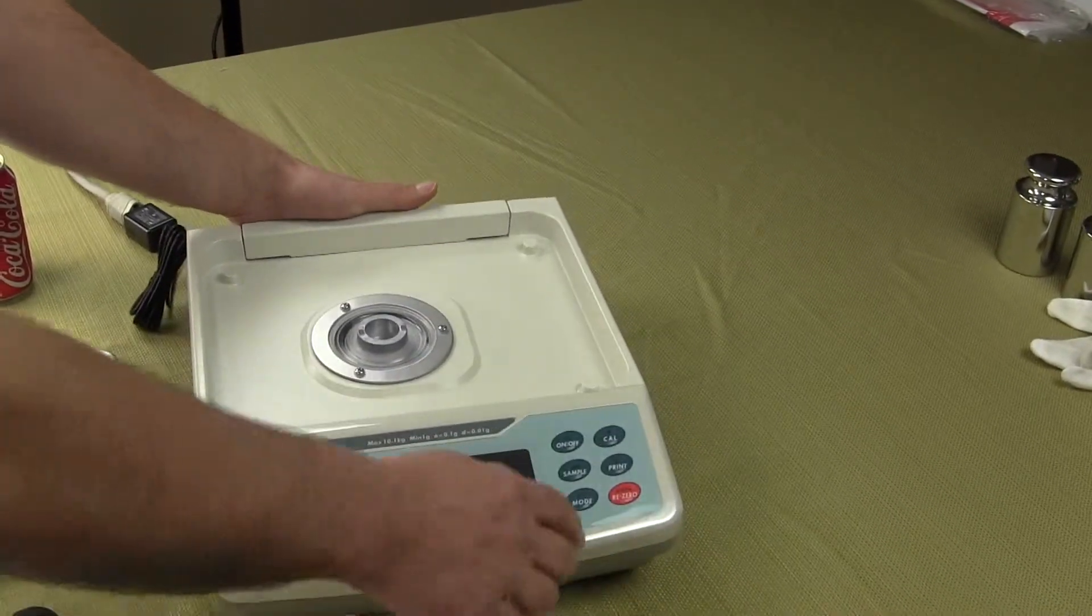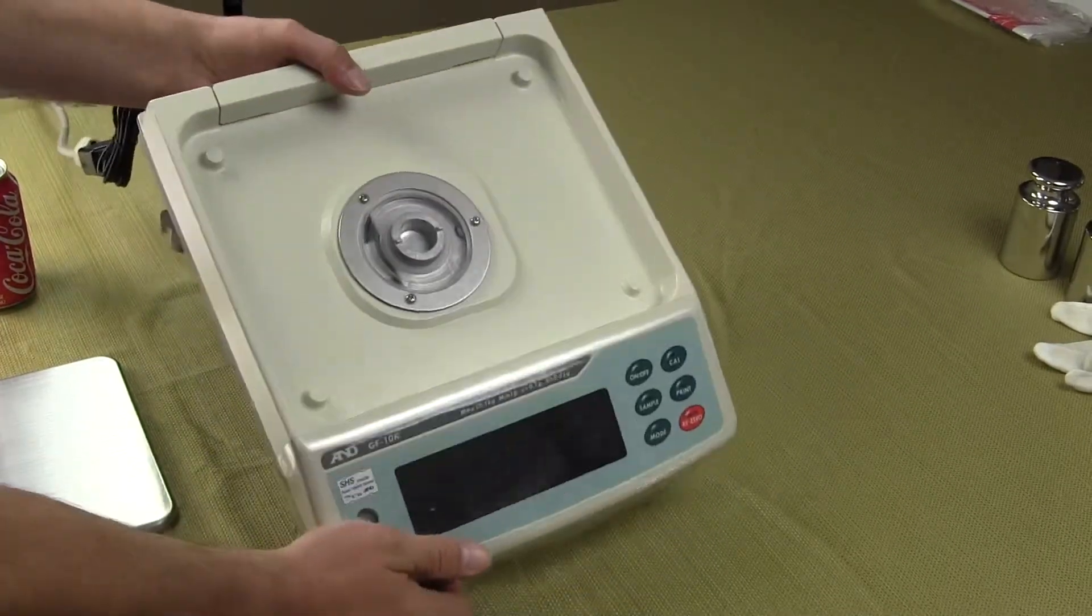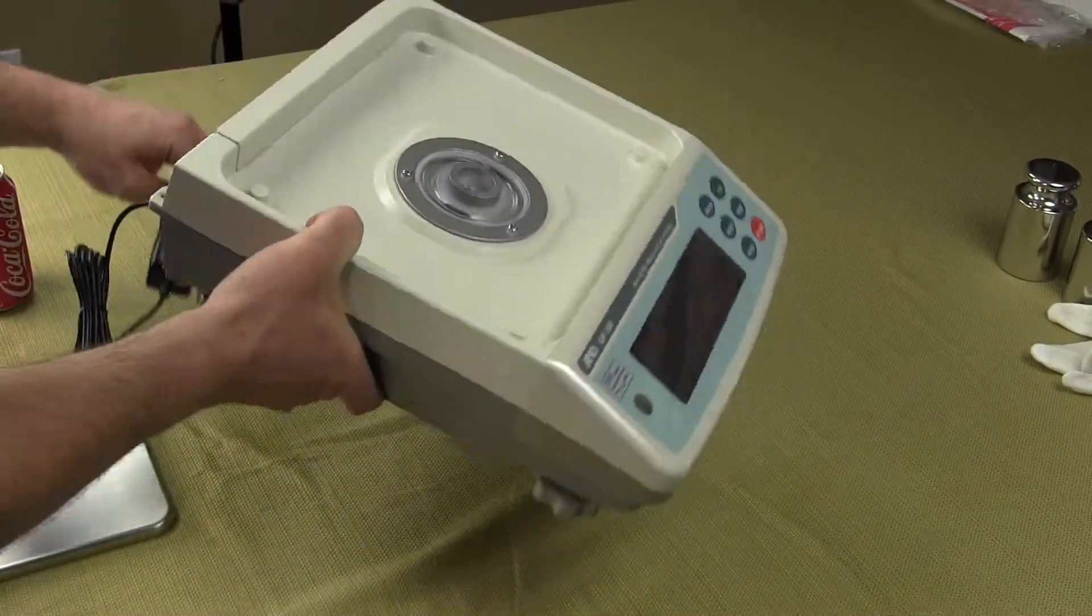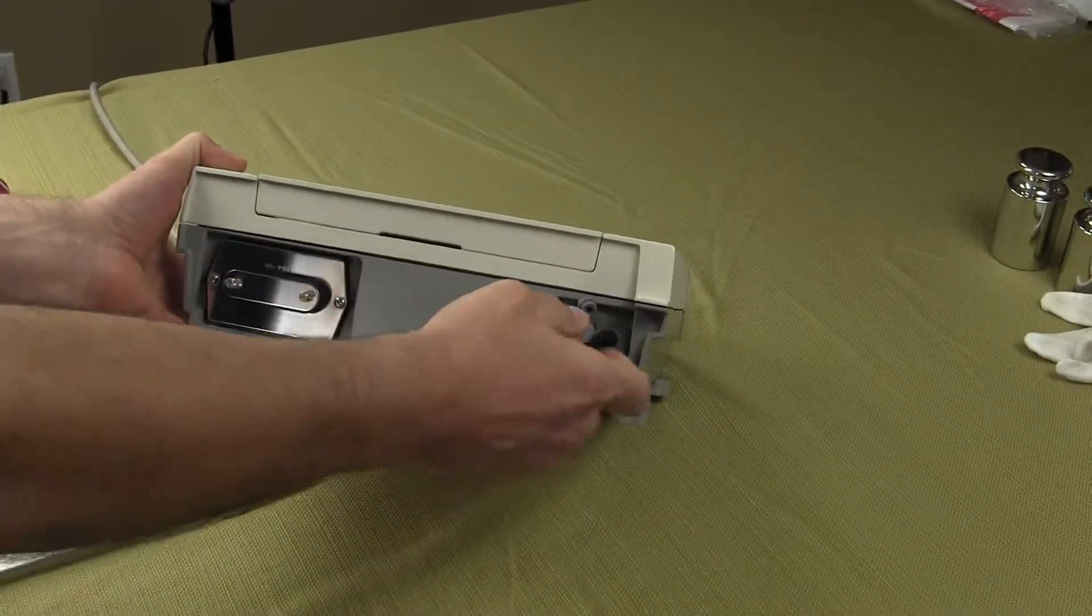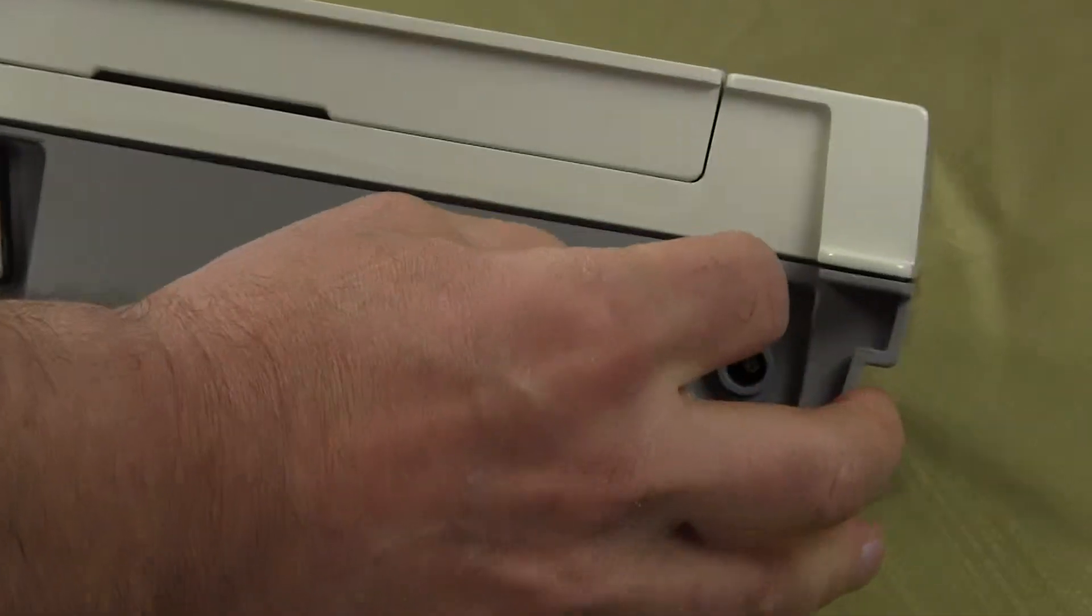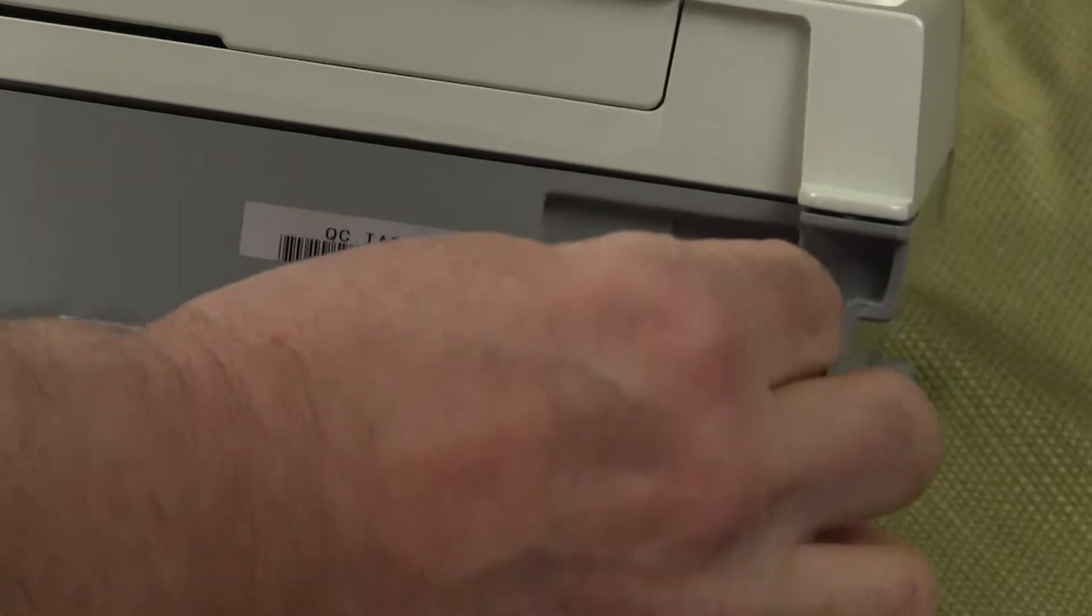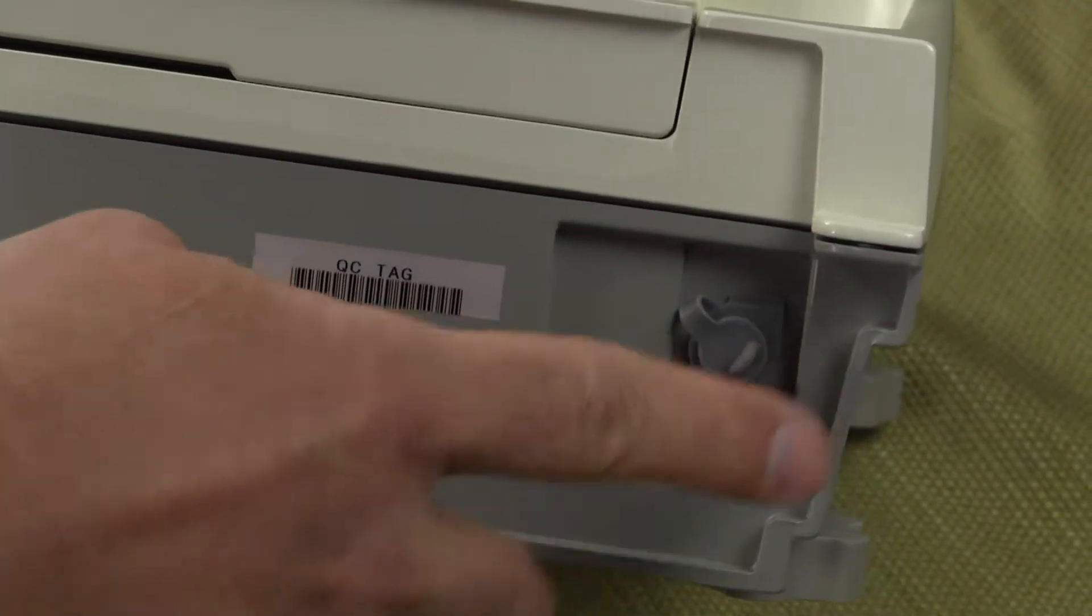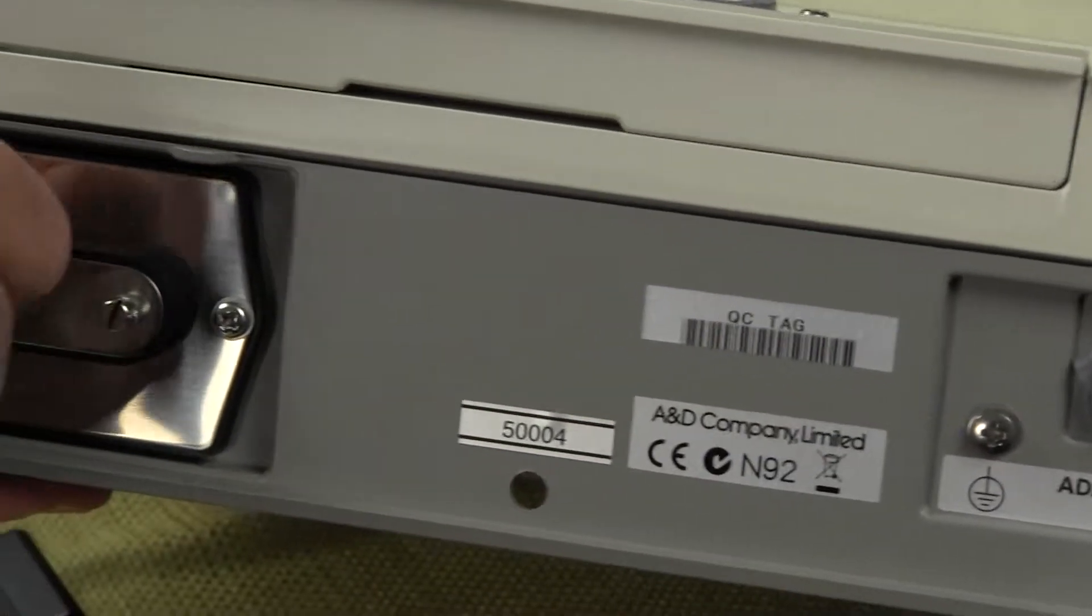On the rear of the scale, let me just shut this off. I'll shut the scale off. On the rear of the scale, we have the AC adapter. This particular unit only works off of AC adapter. You can see A&D again has a little cover here for the AC adapter. So if you were to move the balance around, everything is well protected.